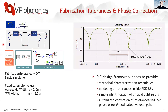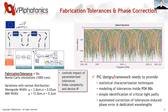On the left we have an unbalanced Mach-Zehnder interferometer. On the right you can see the spectrum with free spectral range and the resonance frequencies for a specific nominal waveguide and MMI width. One thing we can do is consider fabrication tolerances and run the simulation a thousand times. This results in strong fluctuations in the transfer characteristic. The free spectral range stays quite constant, but the resonance frequency shifts all over the place due to phase noise introduced by varying device parameters.